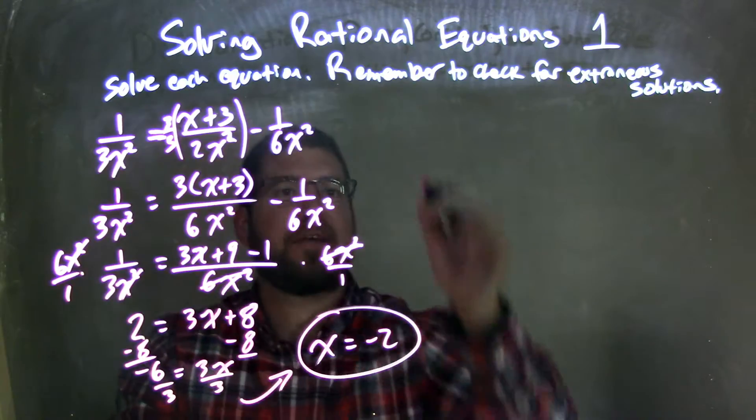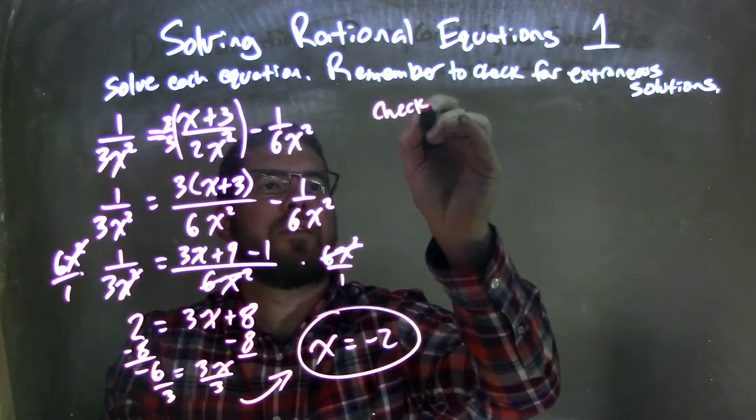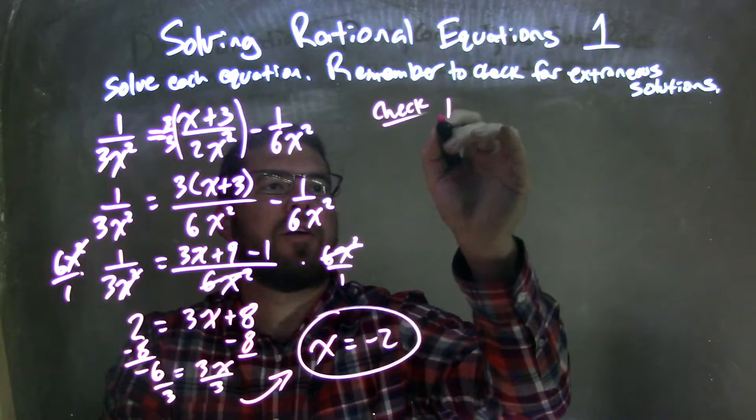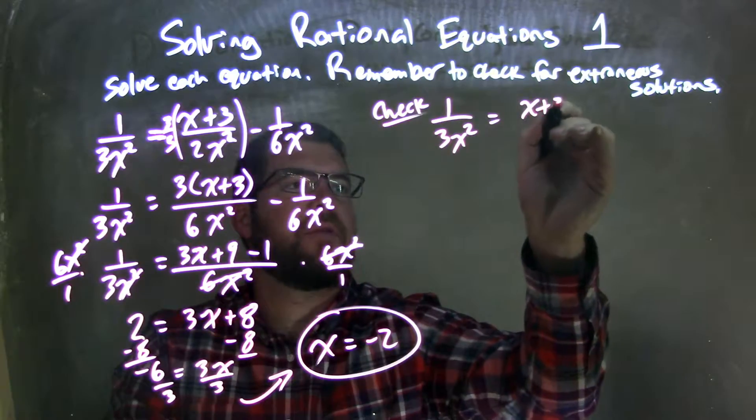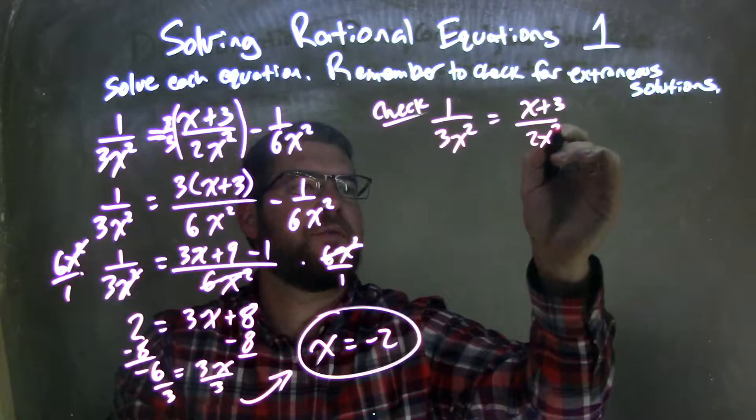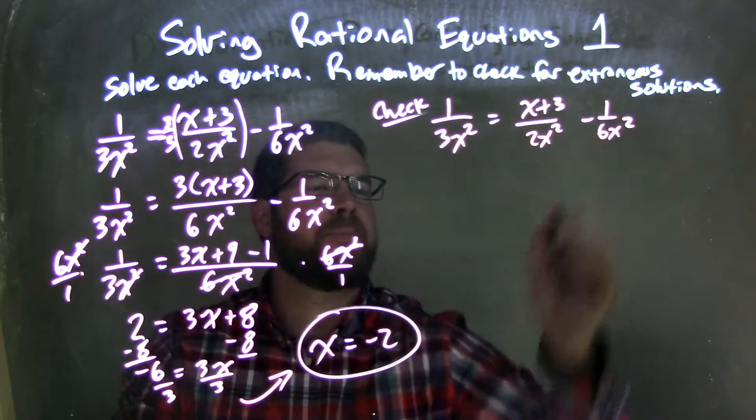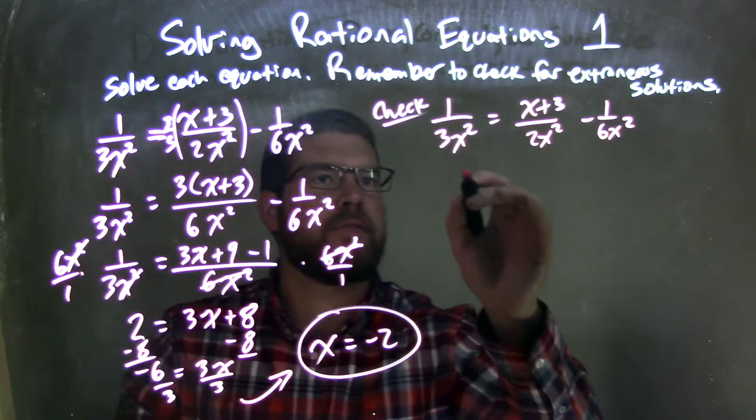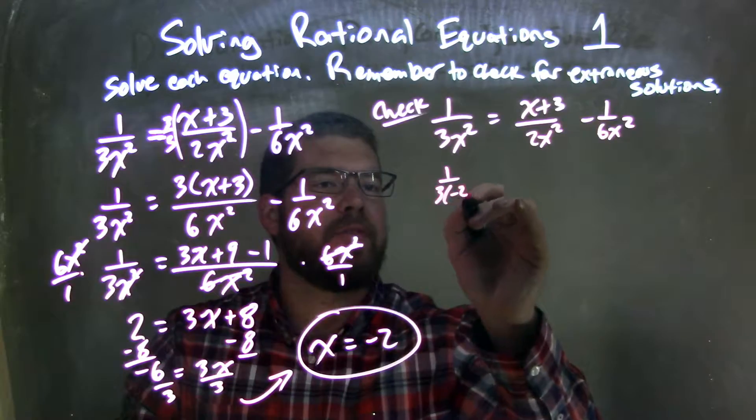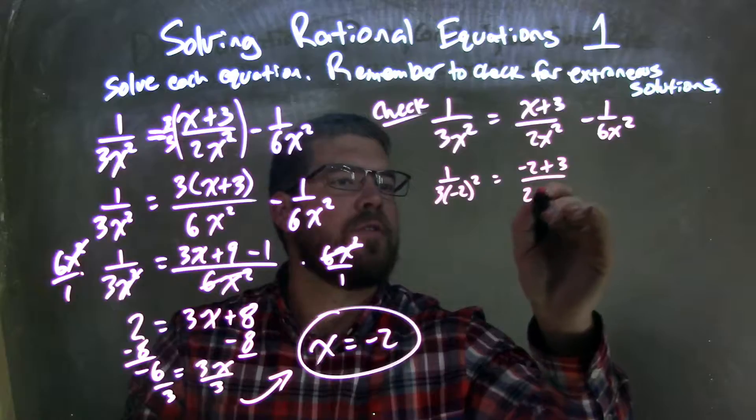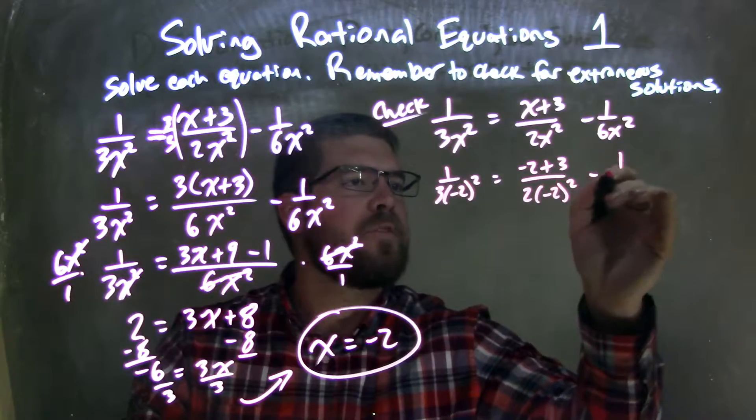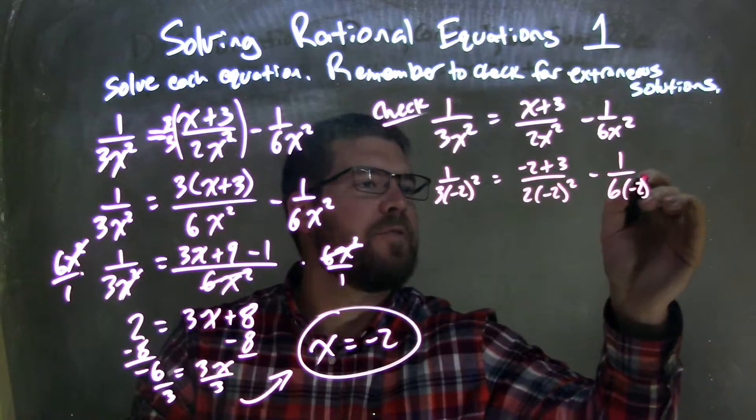Now we need to check that work to see if we have an extraneous solution. We rewrite our equation: 1 over 3x squared equals x plus 3 over 2x squared minus 1 over 6x squared. We plug negative 2 in for x, so we have 1 over 3 times negative 2 squared equals negative 2 plus 3 over 2 times negative 2 squared minus 1 over 6 times negative 2 squared.